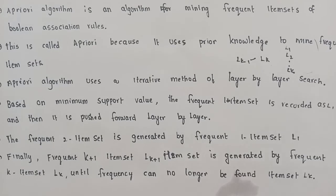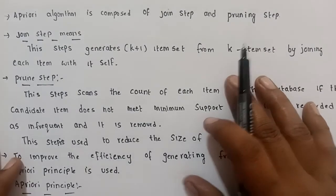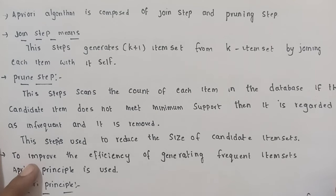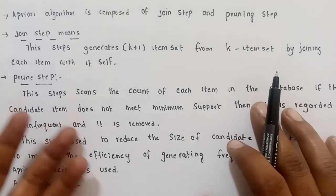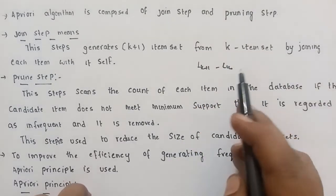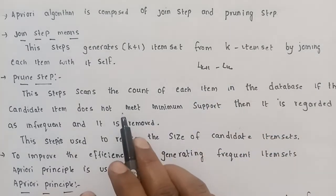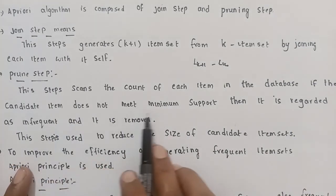This process repeats until a frequent item set can no longer be found. There are two main steps: the join step and the pruning step. The join step generates K+1 item sets from K item sets by joining each item with itself, so previous items are used to generate the next item sets. The pruning step checks each item in the database — when a candidate item does not meet the minimum support, it is regarded as infrequent and removed.